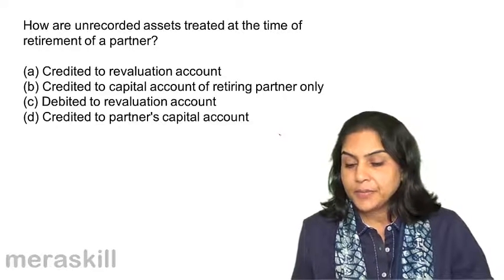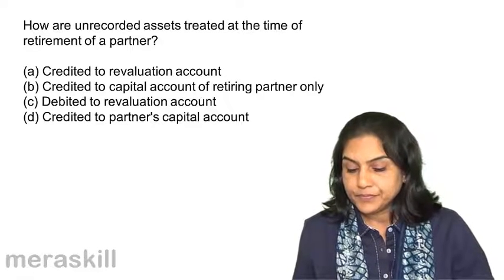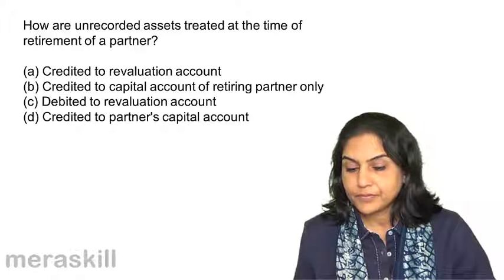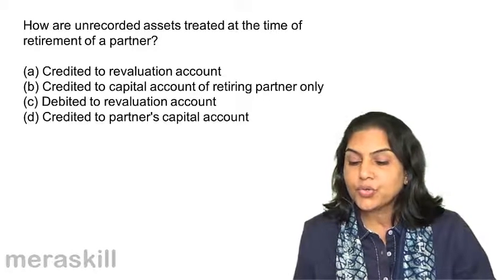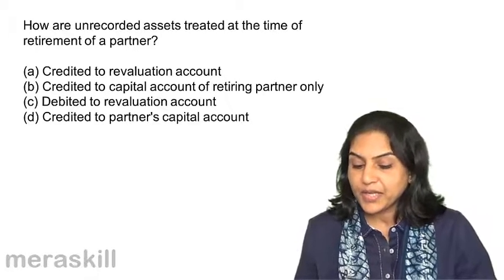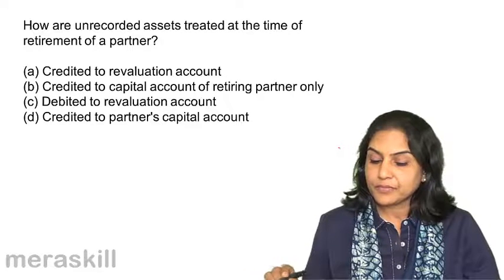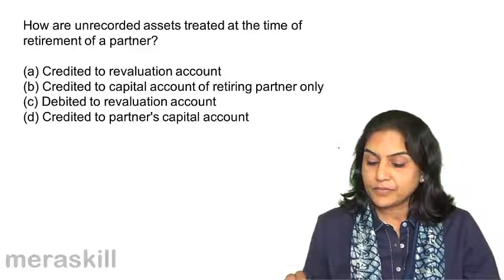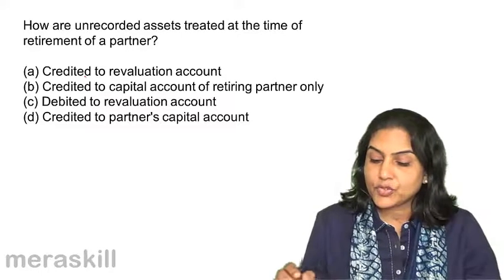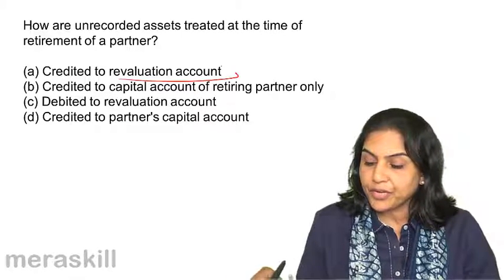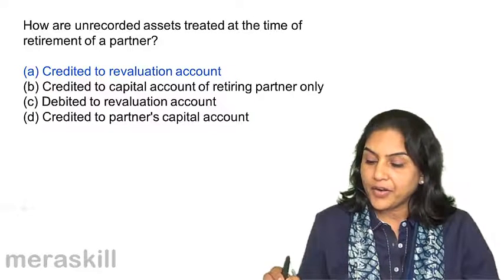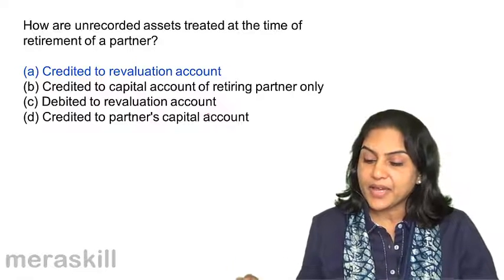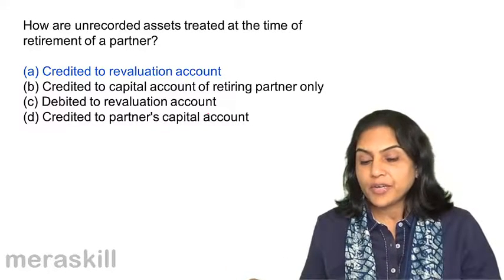For unrecorded assets, the entry would be asset account debit to revaluation account. So the correct option is A: Credited to revaluation account. The entry is asset account debit to revaluation account.